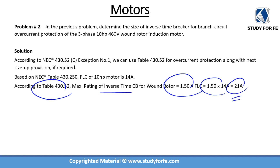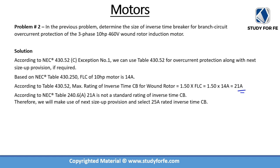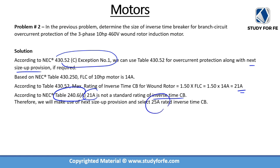We've established the maximum allowable OCPD rating using these two tables and the relevant code section. However, when we look at table 240.6(A), which lists standard ratings of inverse time circuit breakers, we find that 21 amps is not a standard rating. So we apply the next-size-up provision from 430.52(C) exception number 1 and select 25 amps. The answer is 25 amps, not 21 amps.